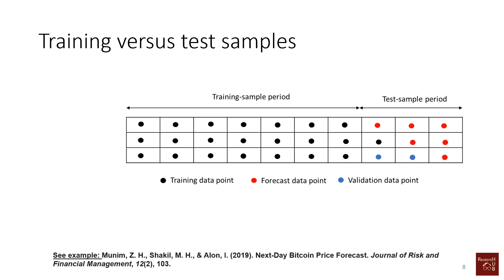The first one is the 70/30 rule. Based on the data sample that we have, we divide it into 70 percent and 30 percent. So 70 percent of our data will be the training sample and 30 percent will be our test sample. If we have 10 data points, we can take seven in our training sample, estimate a model, and then apply the same model to estimate the three out-of-sample periods.